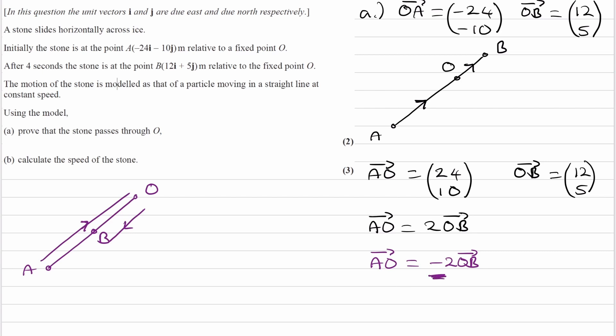If AO were a negative scalar multiple of OB, that would mean when the particle travels from A to B, yes, O is in the same straight line, but it's not along the path from A to B. It will not go through O as we're going from A to B.